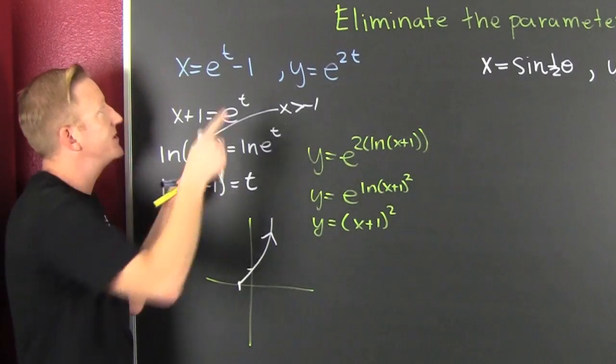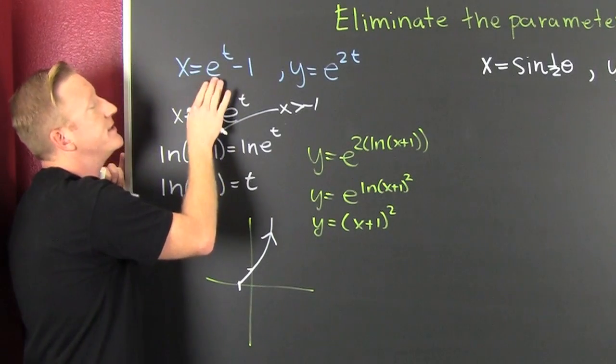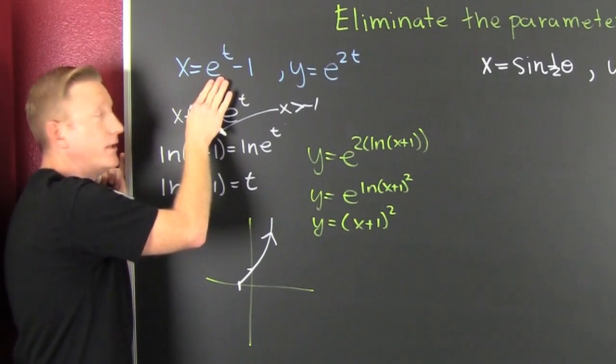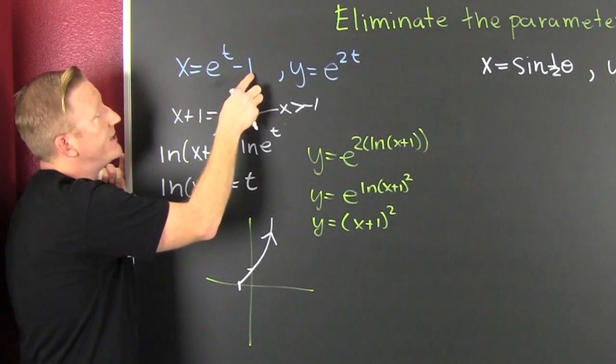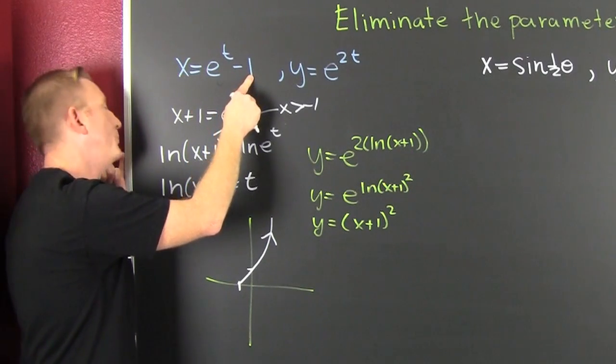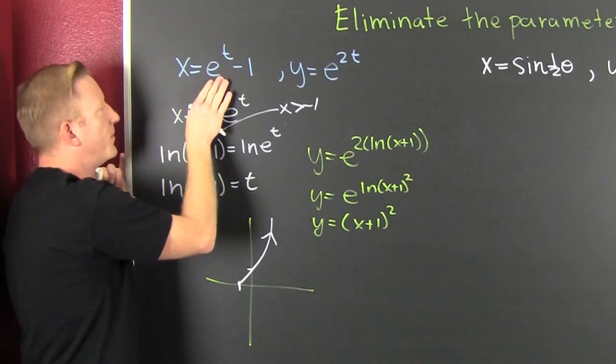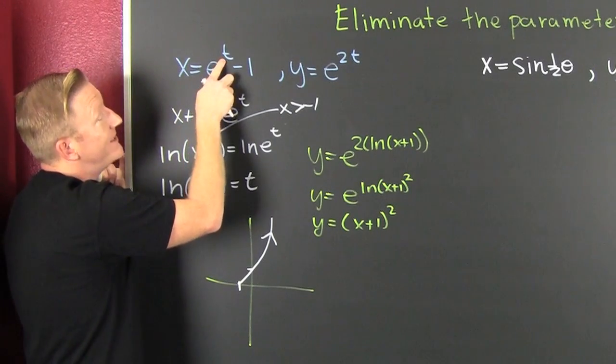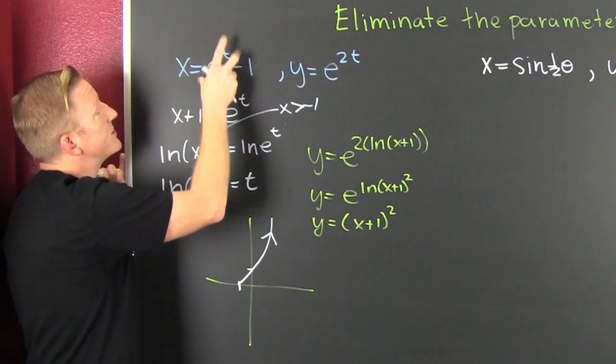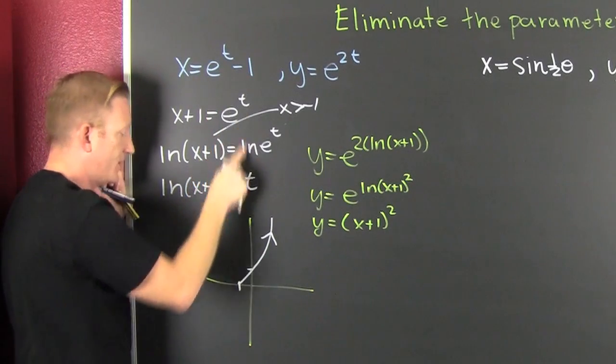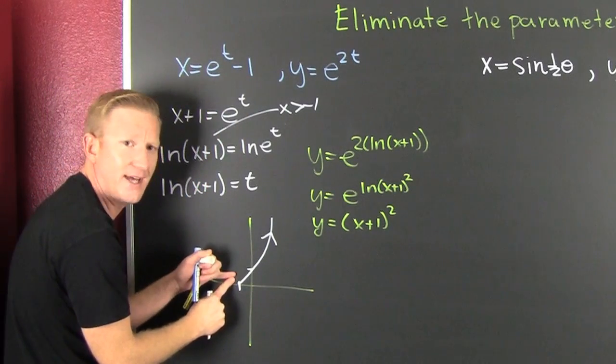That has to do with our domain restriction because of this. And another way to see that domain restriction is to look at this. This is always a positive number, always a positive number minus one. The most negative it could be is minus one when this is super small. When this is super small, this one goes to zero and you're left with one. And that's why you have that there.